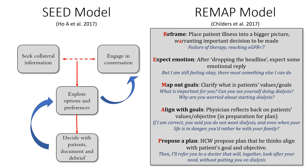I quite like the REMAP model by Childers in 2017: R — reframe, E — expect emotion, M — map out goals, A — align with goals, P — propose a plan. Sometimes patients don't realize they require dialysis, and we need to tell them — for example, that their GFR is declining or has reached a very low level and we should start discussing when to initiate dialysis. You would expect emotion from the patient, just like when breaking bad news — they may say they feel okay so why should they start dialysis, or be in denial saying there must be something else they can do. That's why it's important to start this conversation quite early, not just when dialysis is imminent.